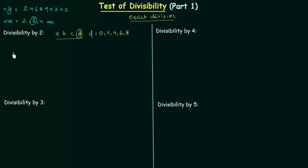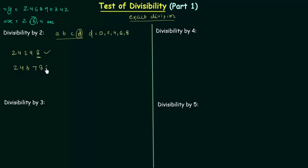For example, take the number 24248. We only focus on the units place digit, which is 8. Since 8 is divisible by 2 (8 divided by 2 equals 4), the number 24248 is divisible by 2. Another example: 243789. The units place digit is 9, and 9 is not divisible by 2, so the complete number is not divisible by 2.